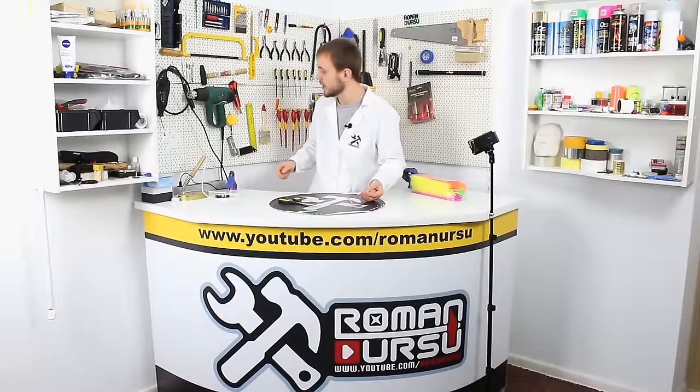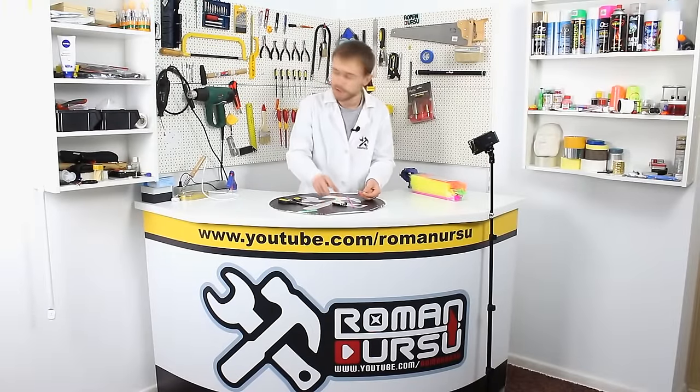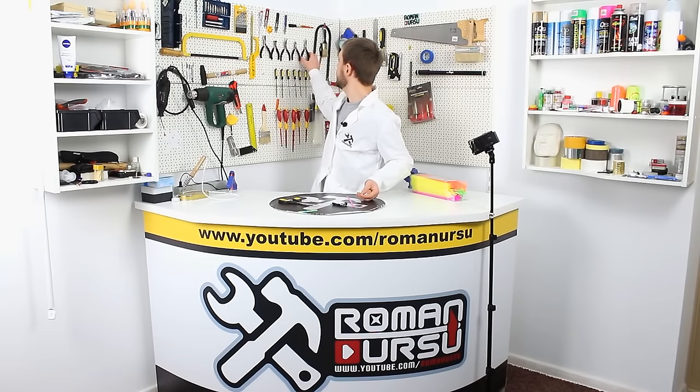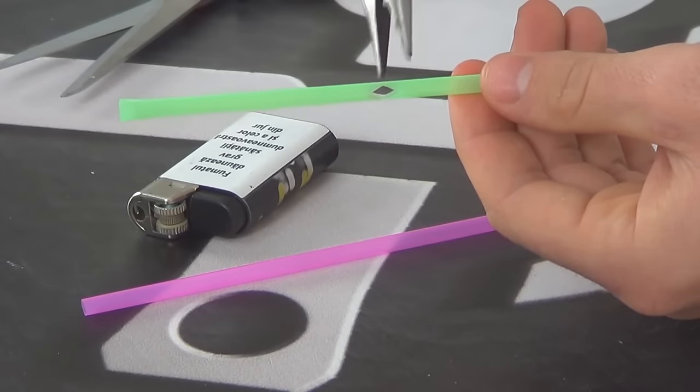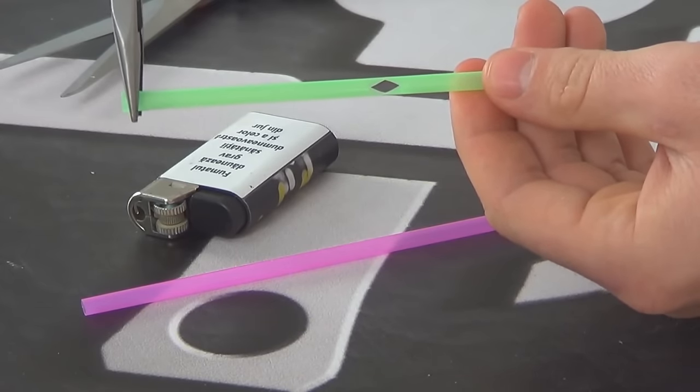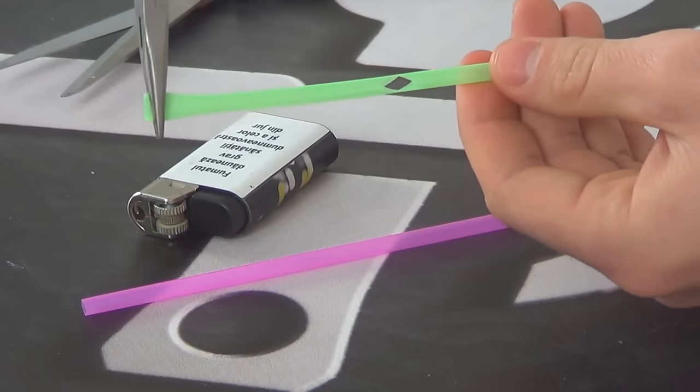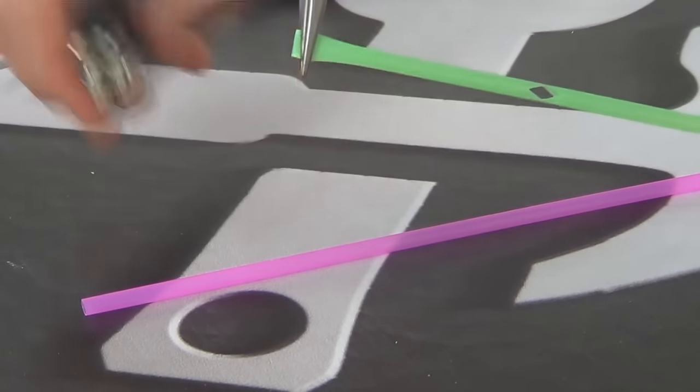Now let's go to the next step. We will need a lighter and round pliers. We grab one end of the straw with our pliers and heat it up with a lighter.